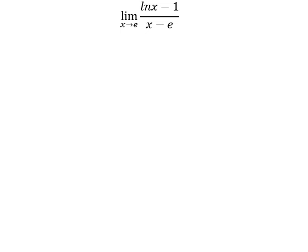Hello everybody. Today I want to show you how to solve this problem. When we put e in here and here, f of e gives us 1, one minus one gives us zero. e minus e gives us zero. So we have zero over zero, which means we can use L'Hospital's rule. That means we need to take the derivative.